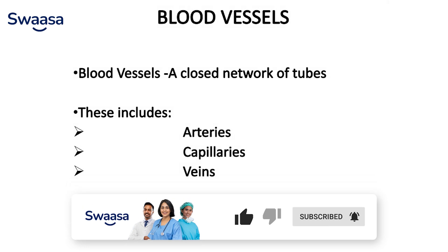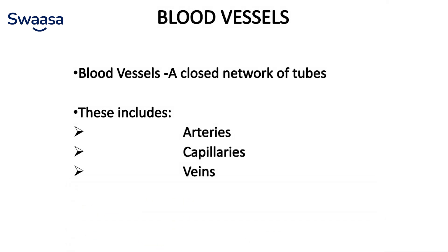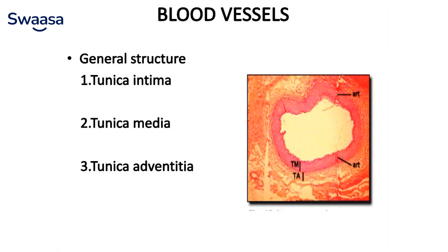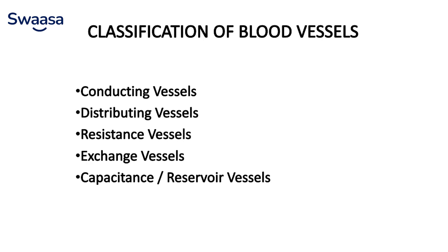Coming to blood vessels, a closed network of tubes is called blood vessels, and it includes arteries, capillaries, and veins. Arteries are thick-walled tubes with elastic fibers and circular smooth muscles. Capillaries are also called microscopic vessels, which are one cell thick. Veins are also called draining channels. Blood vessels generally have structures called tunica intima, tunica media, and tunica adventitia. Classification of blood vessels: conducting vessels, distributing vessels, resistance vessels, exchange vessels, and capacitance or reservoir vessels.